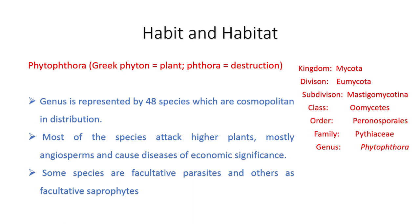This genus is represented by about 40 to 80 species, which are mostly cosmopolitan in distribution. The nature of this fungus is sometimes facultative parasite and sometimes facultative saprophyte. Facultative parasite means it is normally a saprophyte but sometimes becomes a parasite when a living host is available. Facultative saprophyte is the opposite — normally it is a parasite, but if no living host is available, it becomes a saprophyte.